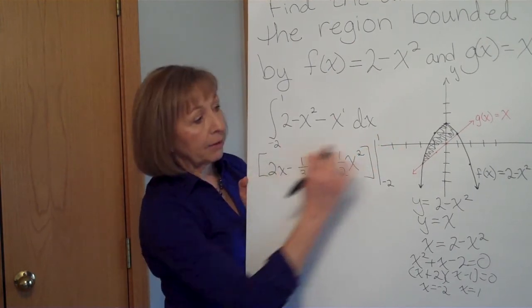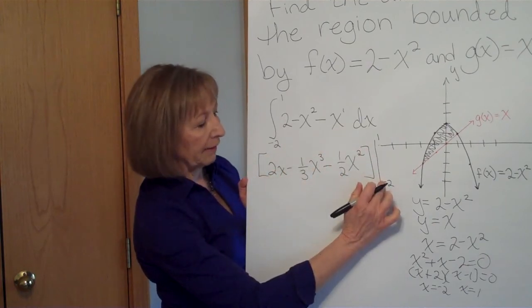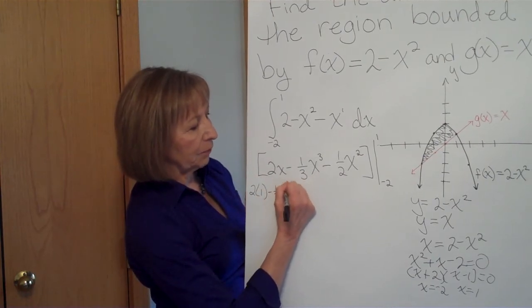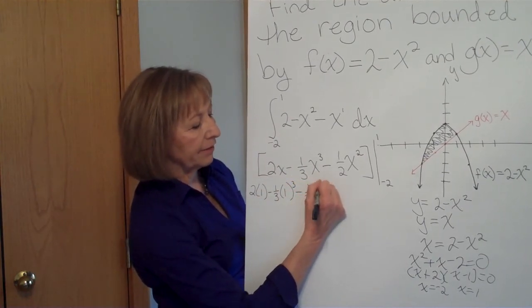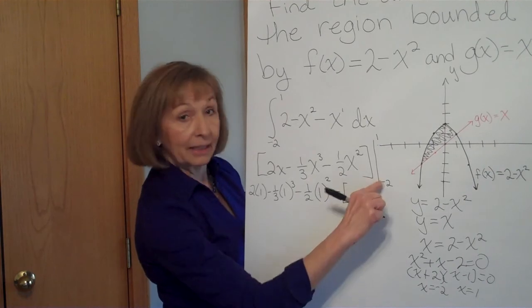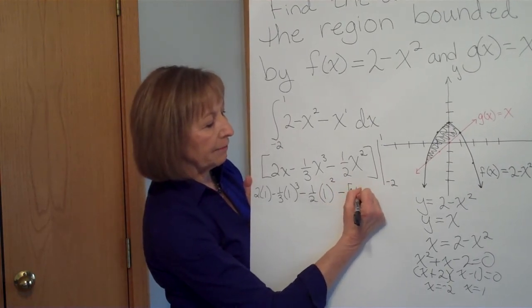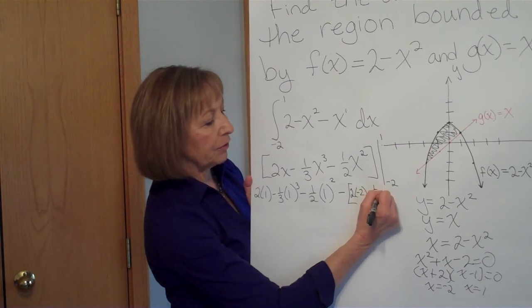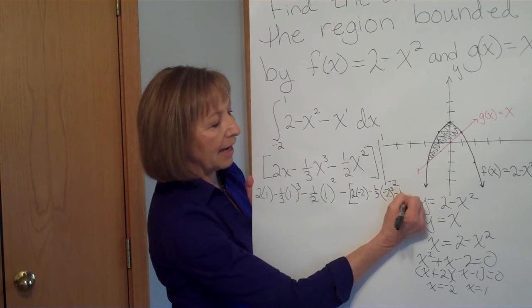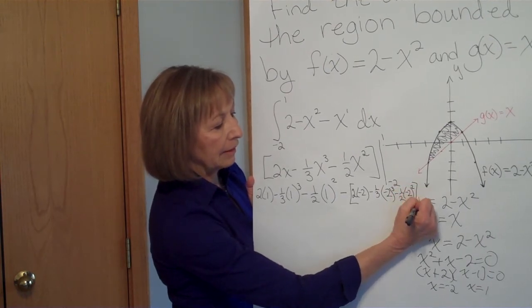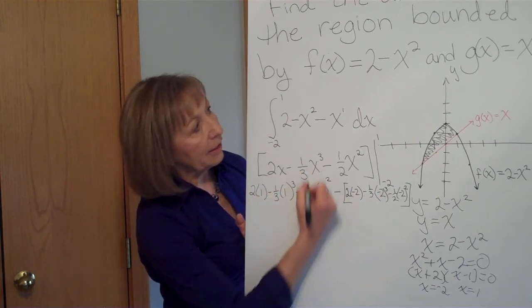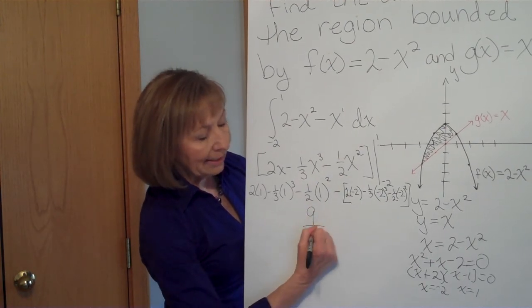Now remember to evaluate that, we plug in the top number minus plug in the bottom number. So it's 2 times 1 minus 1 third times 1 cubed minus 1 half times 1 squared. And then subtract off from that, plugging in the negative 2. So 2 times negative 2 minus 1 third times negative 2 cubed, and then minus 1 half times negative 2 squared. And when you go through and do the whole process with that, figuring this out, you'll get an area of this region of 9 halves.